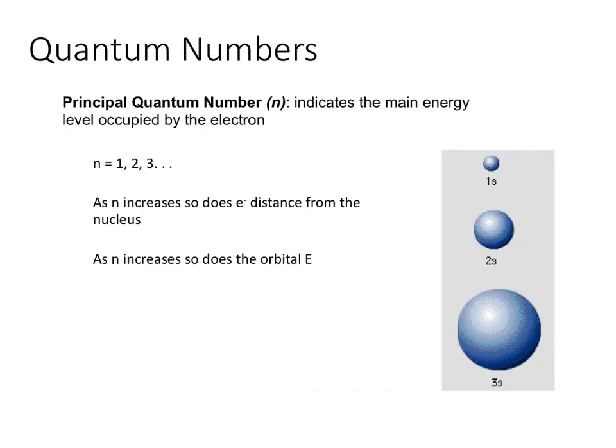There are four different types of quantum numbers. The first is the principal quantum number, represented by the letter N. It indicates the main energy level occupied by the electron. N can be 1, 2, 3, and so on. The higher the number, the further that electron will reside from the nucleus and the higher its energy.